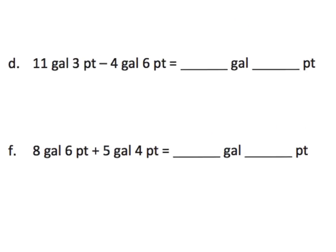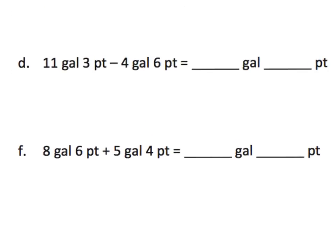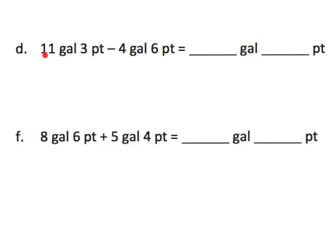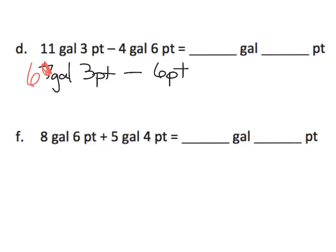Alright, problem D: we've got eleven gallons and three pints, and we're supposed to subtract four gallons and six pints. We can subtract the gallons first — eleven gallons minus four gallons gives us seven gallons. But we still have to subtract six pints. We could take one of those gallons and convert it — that gallon is really eight pints — so eight pints plus three pints gives us eleven pints.